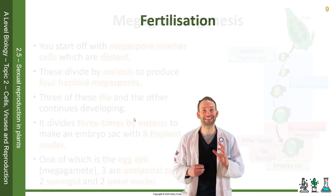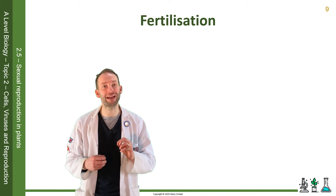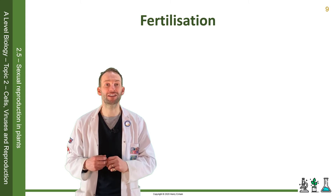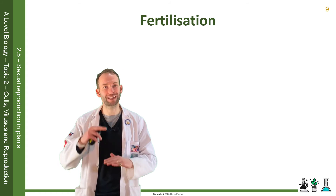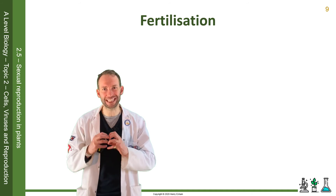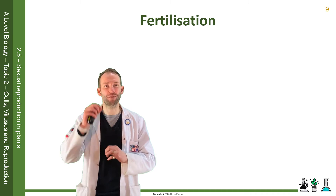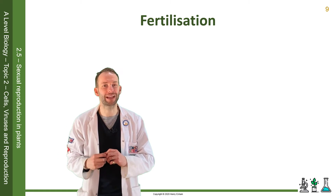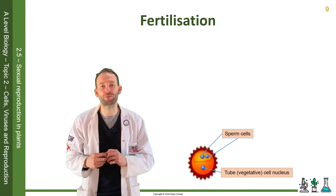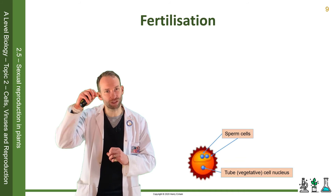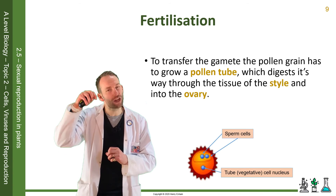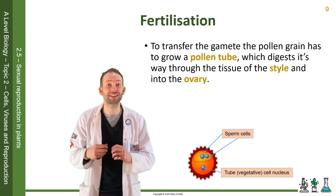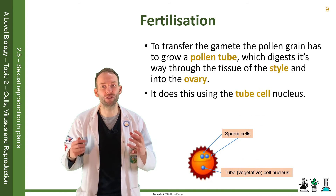The next stage in sexually reproducing plants is for the male gamete to fuse with the female — this is called fertilisation. However, they are located quite far apart: the ovum is deep in the ovary and the pollen has landed on top of the stigma at the top of the style. To transfer the gamete, the pollen grain grows a pollen tube which digests its way through the tissue of the style and into the ovary, using the tube cell nucleus.